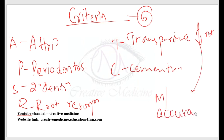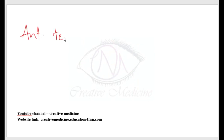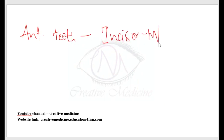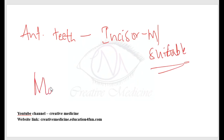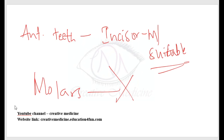The anteriormost teeth are most suitable — that is, incisors are most suitable for determining age with Gustafson's criteria. As we go to the posterior, the accuracy decreases, so molars are not useful for determining the age of the body using Gustafson's method.